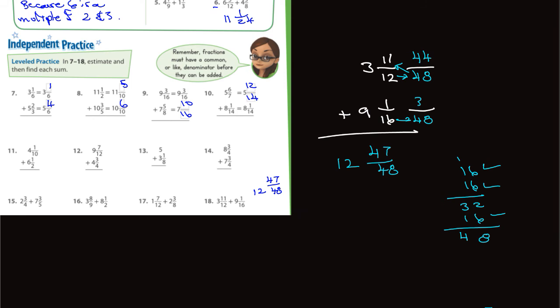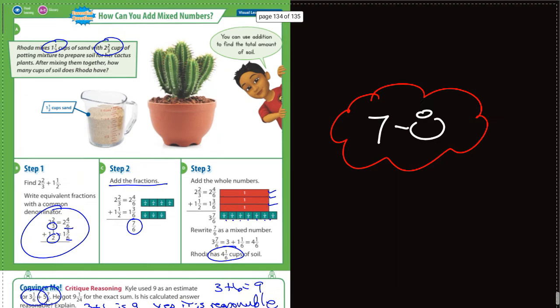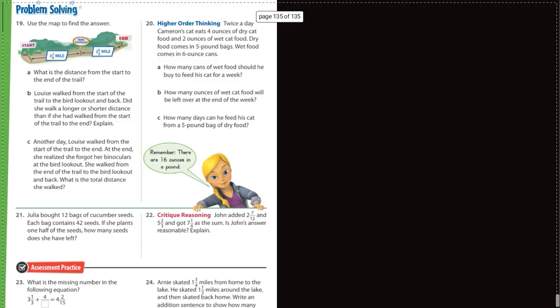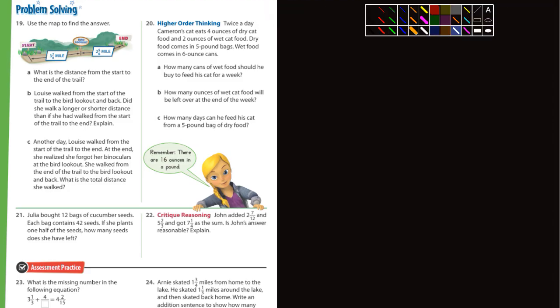Let's look at the last page — problem solving. What's the distance from the start to the end of the trail? It looks like you're going to add 3 and 7/8 and 2 and 5/6. I think you guys could do that.